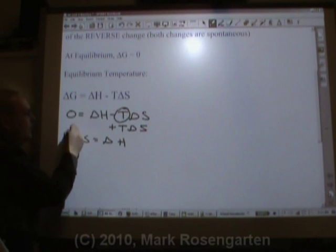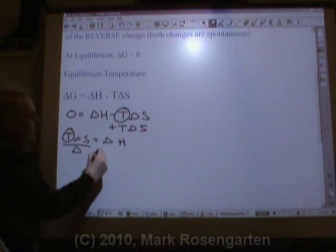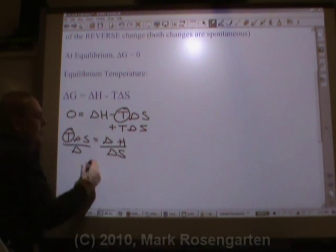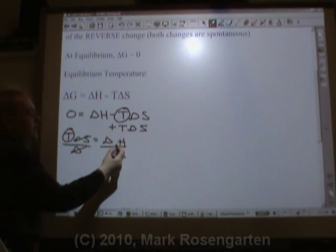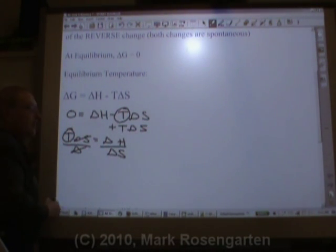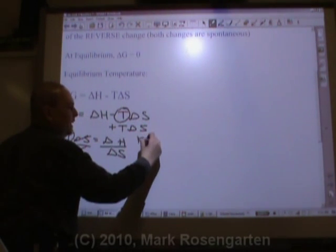Delta S will cancel and leave you with delta H over delta S. And this makes sense, because delta H is measured in kilojoules, delta S is measured in kilojoules per Kelvin.